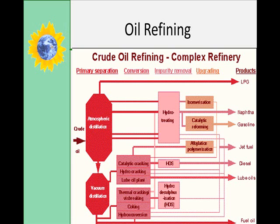Oil shale was never buried deep enough or heated enough to form crude oil. Its hydrogen content is between that of coal and crude oil. Concentrations of oil are low, so at most one barrel of oil can be recovered from 2.4 tons of oil sands or 1.5 tons of oil rocks. Huge amounts of oil shale are found all over the world — the total global resource is a thousand times greater than crude oil reserves — but extracting energy from oil shale is not practical today.